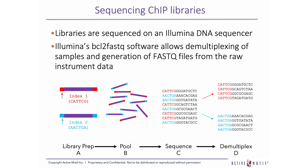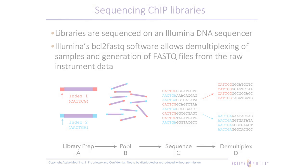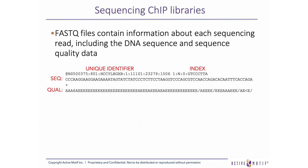After sequencing, the Illumina base call data files need to be converted from BCL format to readable DNA sequence. Illumina's BCL to FASTQ software performs this conversion while simultaneously demultiplexing the pooled samples using the sequence of the unique indices. The resulting FASTQ format files contain information about each sequencing read, including a unique identifier, the sequence of the index, the sequence of the insert, and information about the quality of the sequence data encoded in Phred+33 format.